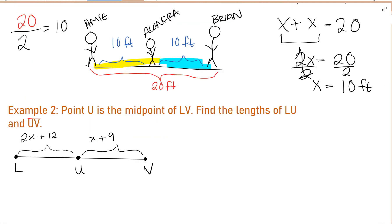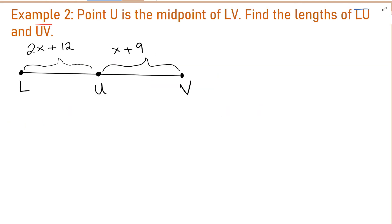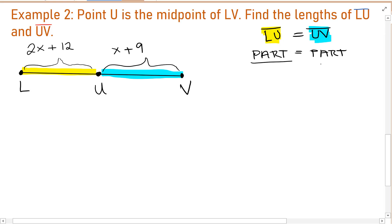Point U is the midpoint of LV. Find the lengths of LU and UV. Because we know that U is the midpoint, we know that the length of LU is equal to the length of UV. Segment LU is equal to segment UV. Another way we can remember to set up our equation is part equals part. So to set up my equation, I will take the first part, which is LU, 2X plus 12, and make it equal to the second part, which is UV, X plus 9. And this is the equation that I need to solve. 2X plus 12 equals X plus 9.